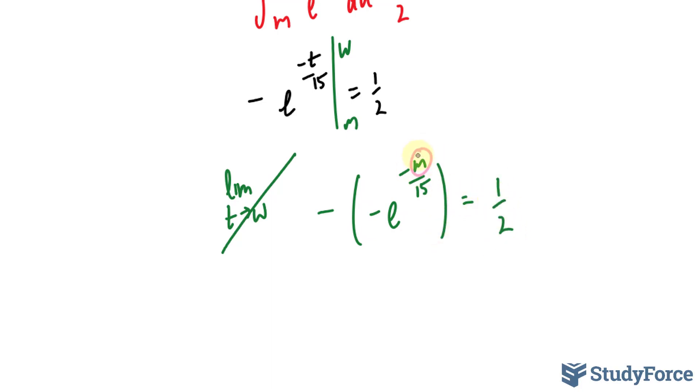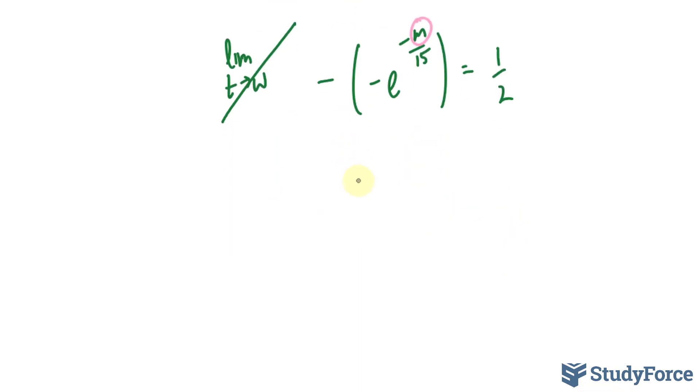Let's figure out what m equals. That's going to be our median. Negative times negative gives us e to the power of negative m over 15 equals 0.5. I'm going to take the natural log of both sides. If I do that, the ln and e cancel. Because remember, ln is the same as log base e. So we have negative m over 15 equals ln of 0.5.